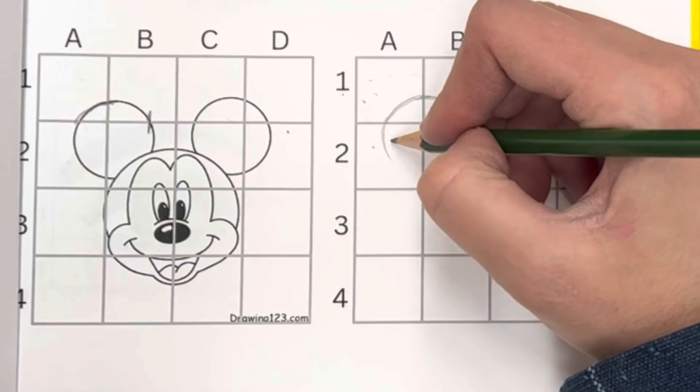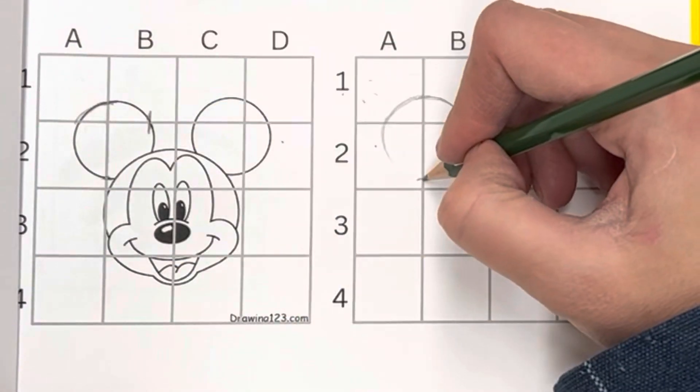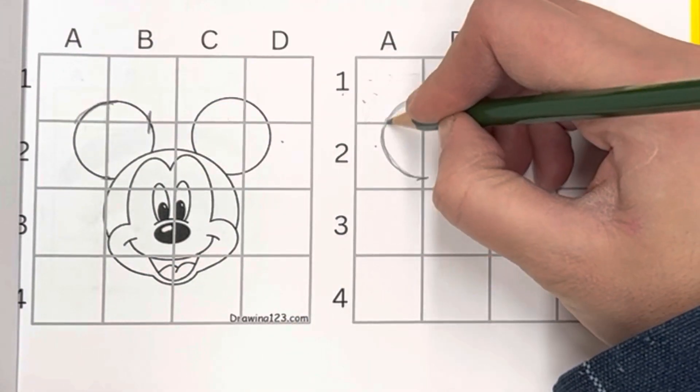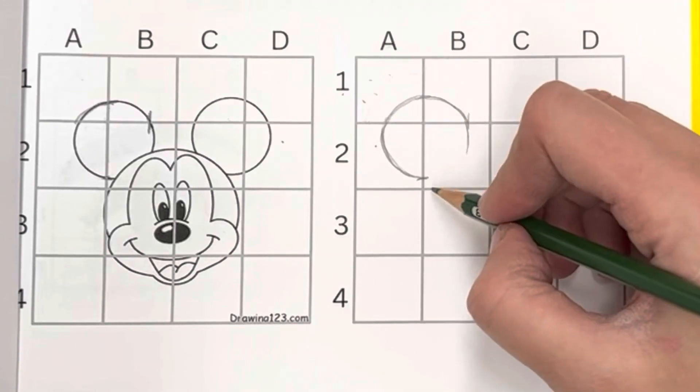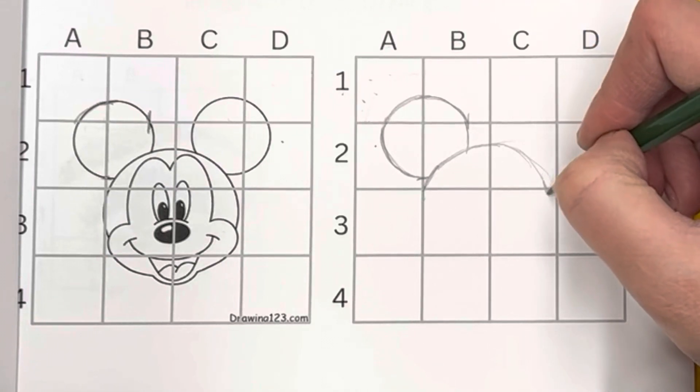So I'm using these gridlines as a guide for where to draw. And if you're ever drawing and you're like, this doesn't look right, try and cross-check and say, okay, where does this head start and end?